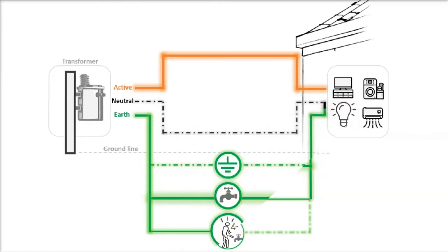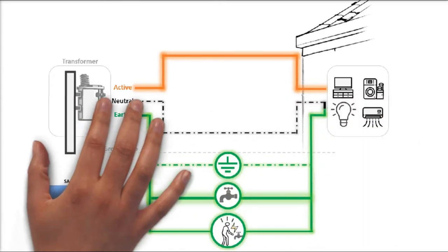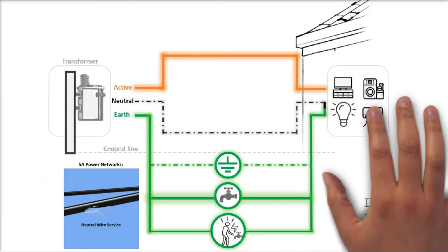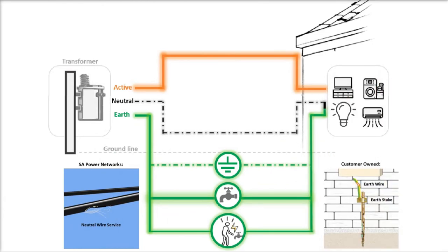However, if both the neutral and the earth connection become damaged, corroded, or in poor condition over time, there is a risk of receiving an electric tingle, or worse, an electric shock when touching a metal tap or electrical appliance, becoming part of the electricity's path.